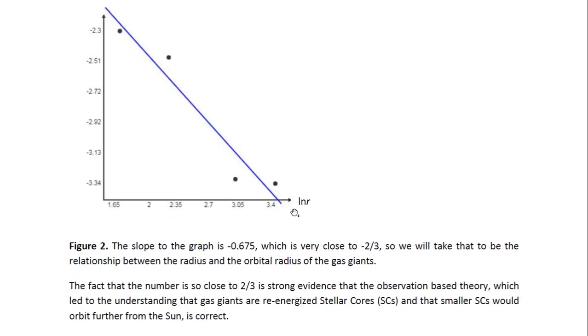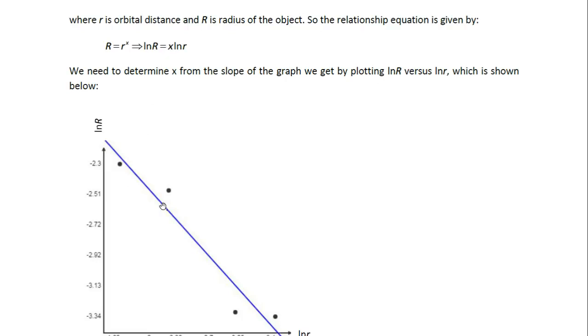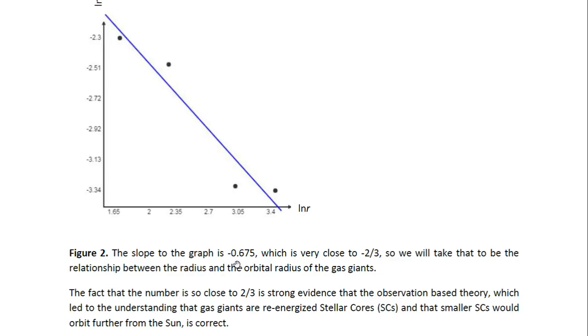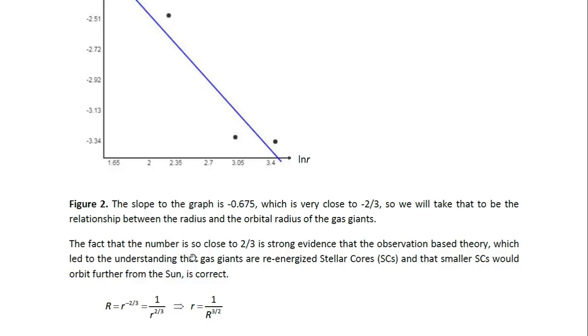But this is what we get when we plot these. And then we can, from the slope of the graph, determine what x is. That's determined from the slope of this straight line graph. It turns out it's minus 0.675, which is extremely close to minus 2 over 3. Minus 2 over 3 is 0.6 recurring, or 0.67. So that means this is extremely close, and from real data, this is very good. So we're going to take that to be the relationship, minus 2 over 3. That's the most likely real relationship. And the fact that the number is so close to 2 over 3 is strong evidence that the observation-based theory, which led to the understanding that gas giants are re-energized stellar cores, and that smaller stellar cores would orbit further from the Sun, is correct.